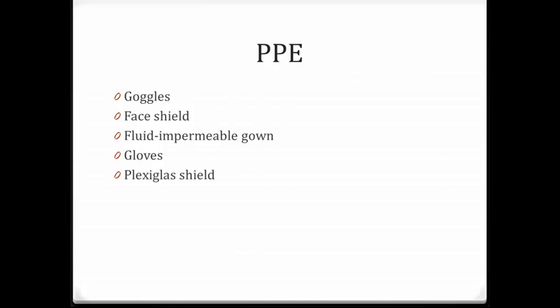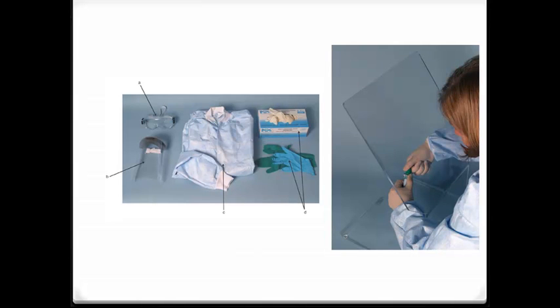PPE, or personal protective equipment, includes goggles, face shields, fluid-impermeable gowns, gloves, and plexiglass shields sometimes used in high splash areas. Here is a picture of goggles, face shield, gown, gloves, and a plexiglass face shield.